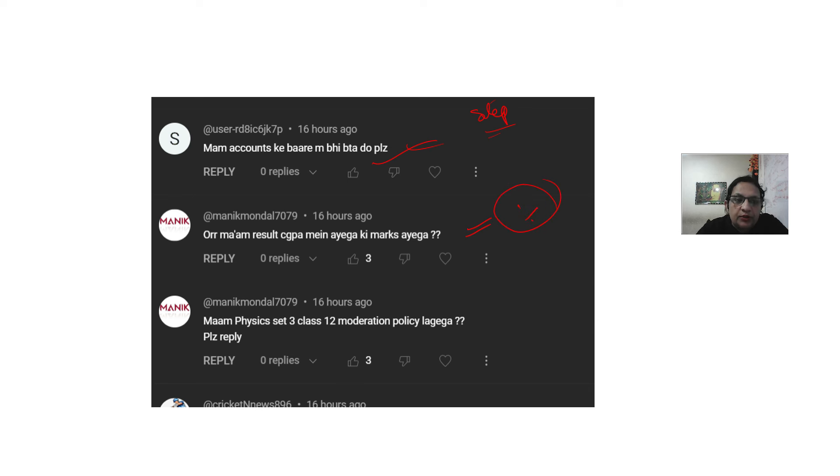You will get a percentage of subjects against marks. Then you will calculate the percentage. You will not generate a percentage. So you don't have to stress on the child. So you don't have to worry about moderation policy. In physics, you have to worry about 100%. So this is the latest update regarding your copy checking and result formation.